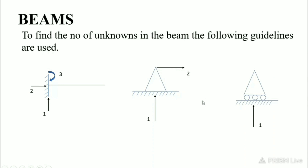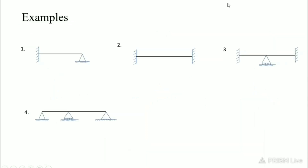The equation to find the degree of indeterminacy or redundancy in beams is: redundancy equals r minus 3, where r is the total number of reactions at all supports.